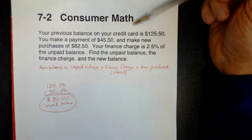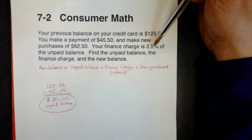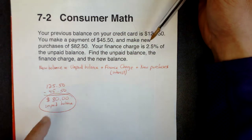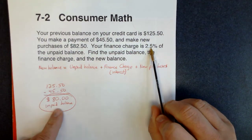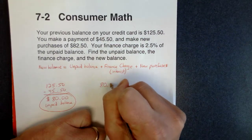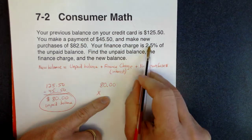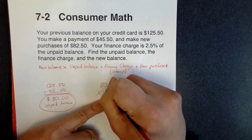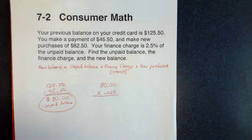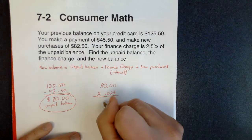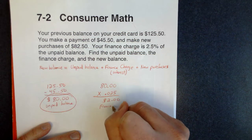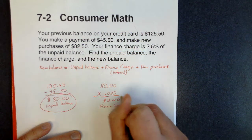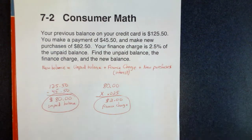The next thing we're going to do is find the finance charge. The finance charge is the amount of interest you're charged on the amount you haven't paid back yet. At this point, we have not paid $80.00 back to the credit card company, so we're going to be charged 2.5% interest on that $80.00. We take $80.00 times 2.5% — you can either use the percent button on your calculator or move the decimal 2 places to the left to get 0.025. $80 times 0.025 is $2.00. That is your finance charge — on that $80 you owed them, you're going to pay $2 in interest.